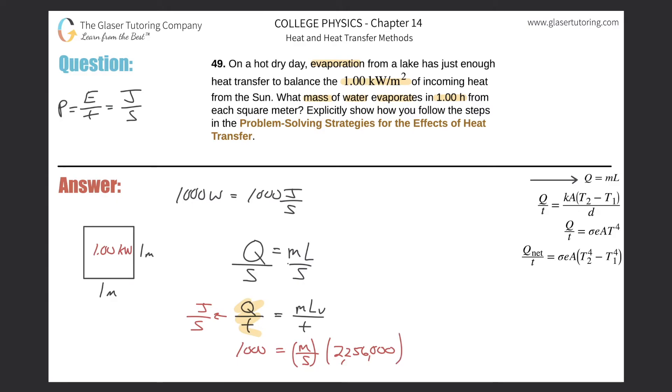How do I solve for mass per second? I just have to do the division: 1000 divided by 2,256,000. We get a value—I'm going to write it up on the top right—the mass per second, meaning the mass of water evaporating every single second, is 4.43 × 10⁻⁴ kilograms.